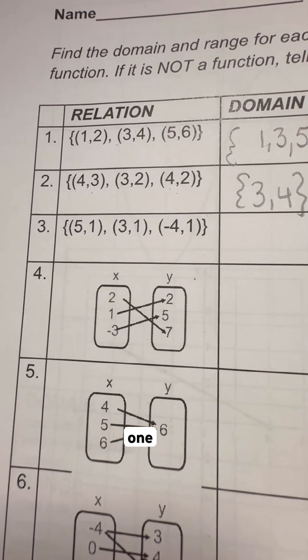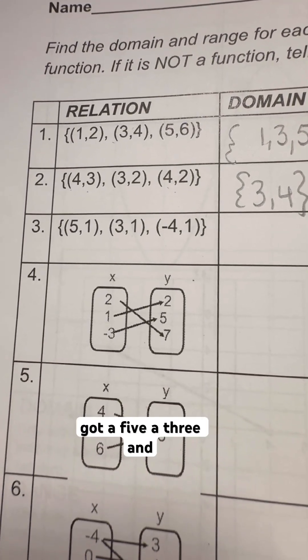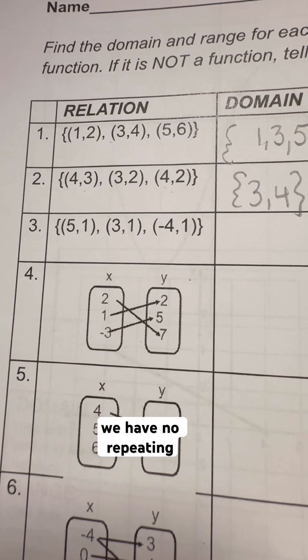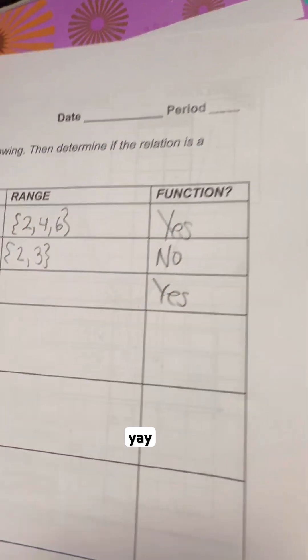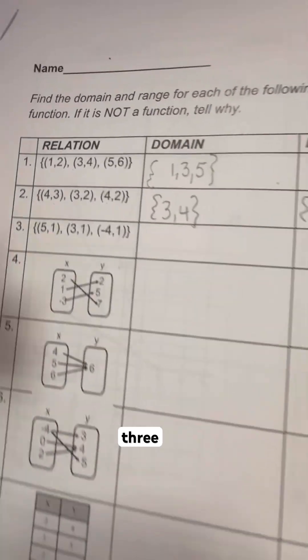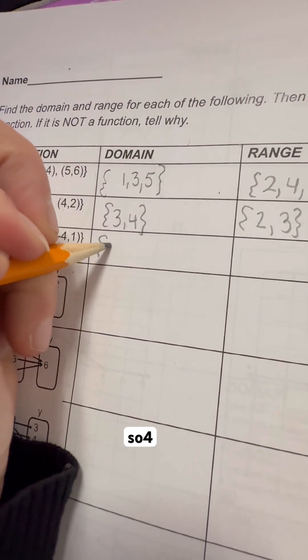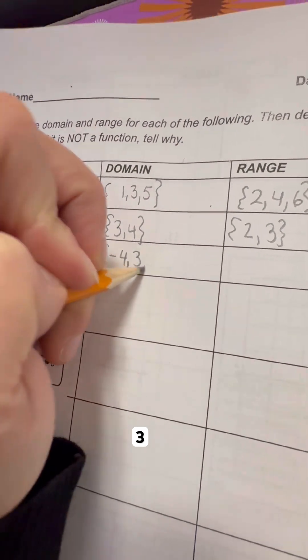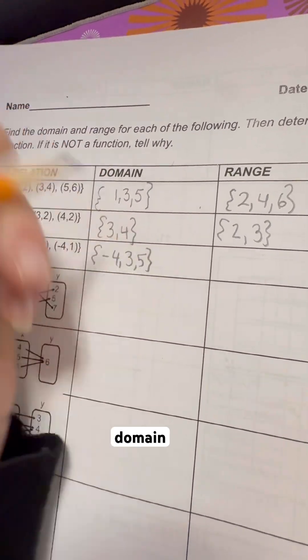All right, last one for this section. We've got a 5, a 3, and a negative 4. So we have no repeating x's. So that makes that a function. And then we do them least to greatest. Negative 4, 3, and 5. So negative 4, 3, 5 are my domain values.